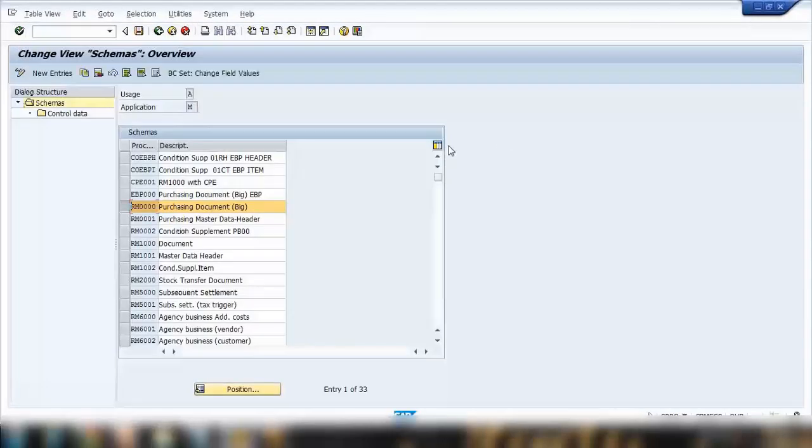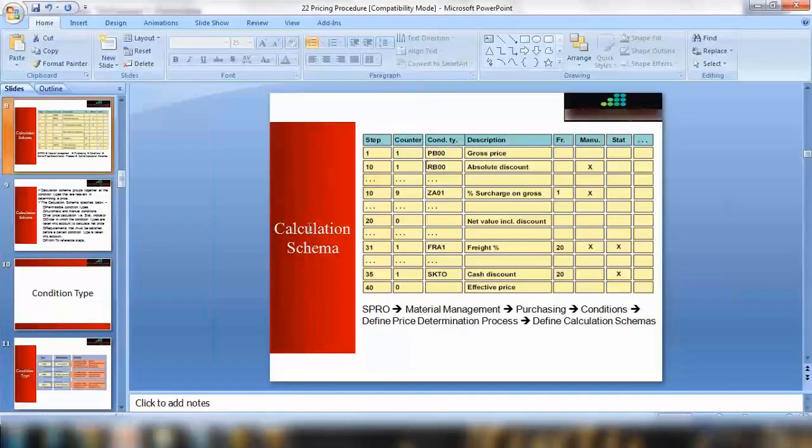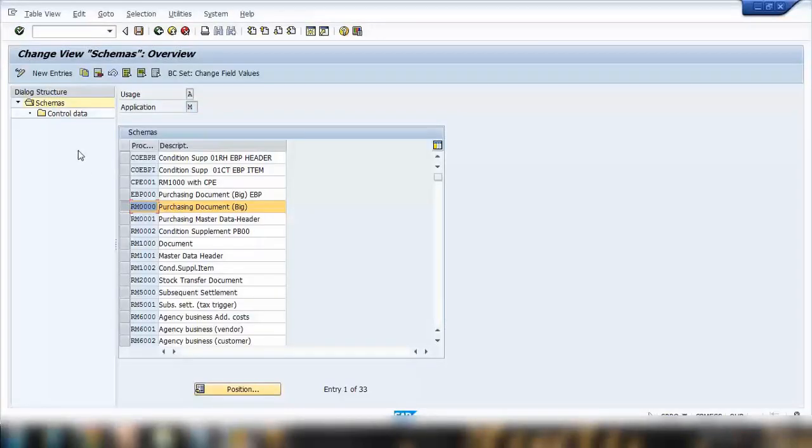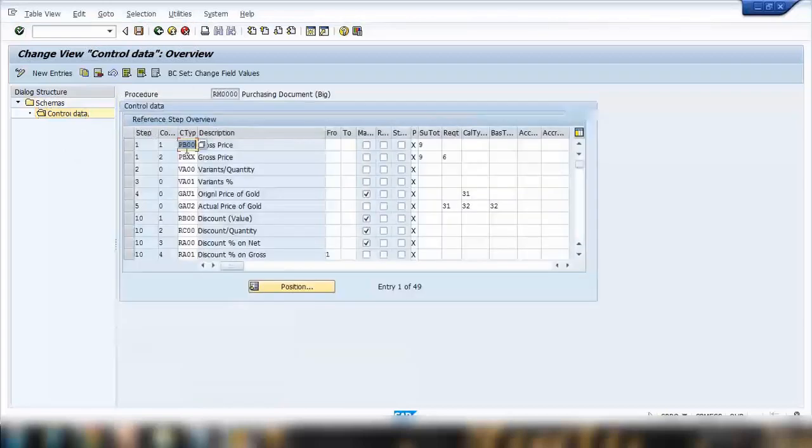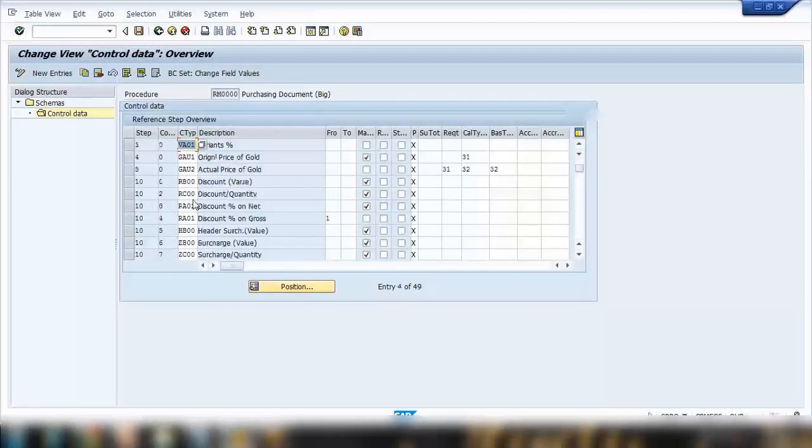So the point to be noted here is the procedure assigned is RM0000. So let me close this one. So that is a standard pricing procedure used in our system. So select your pricing procedure or what you can call it, calculation schema. And double click on control data. So here you can see all the different condition types. You have different condition types. So this one is for gross price. And I'll show you the important ones.